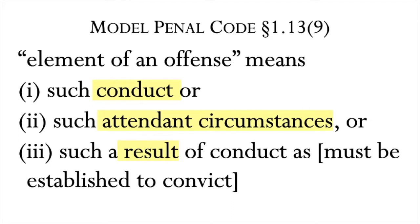We can use this classification to distinguish the offense of reckless driving from an offense of vehicular homicide. The difference is that to convict someone of vehicular homicide, the prosecution must show that a person died. Reckless driving can also be charged, but the prosecution need not show that anyone died as a result — in fact, nobody even need have been hurt. Not all offenses have a result element or attendant circumstance elements, but every criminal offense must include a conduct element.